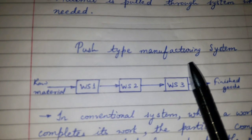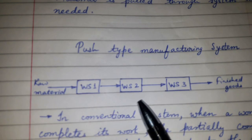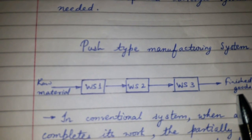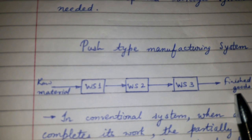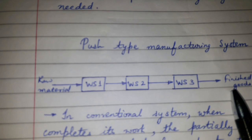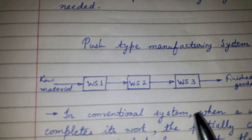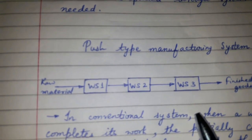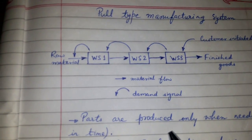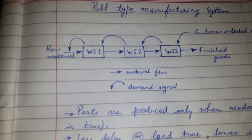In the push type manufacturing system, the material is produced and pushed to the next workstation, then the next, until the finished good is produced. It does not take into consideration whether the component is required by the next machine or whether the finished goods are required — it just keeps on producing. This is the conventional way of manufacturing, whereas pull type is like JIT — just in time — where production happens only when demand is generated.